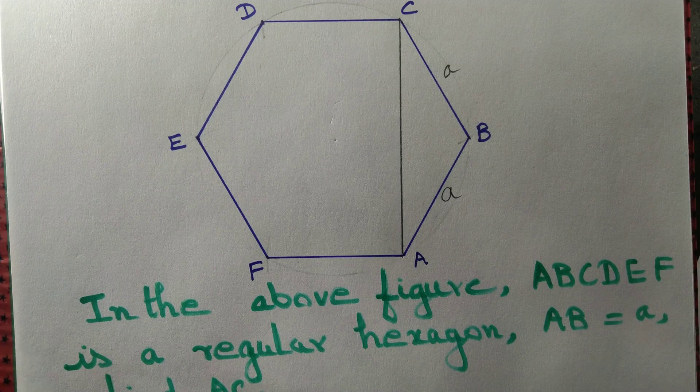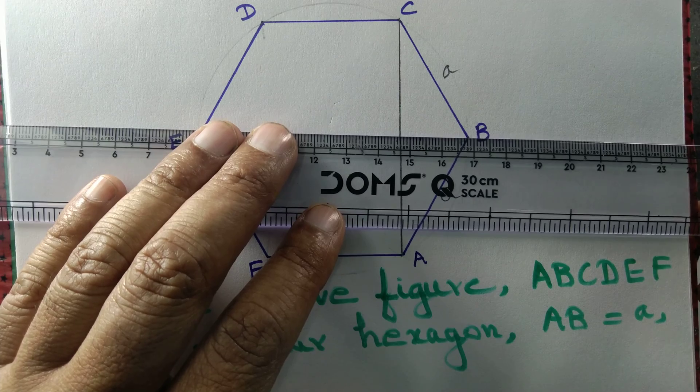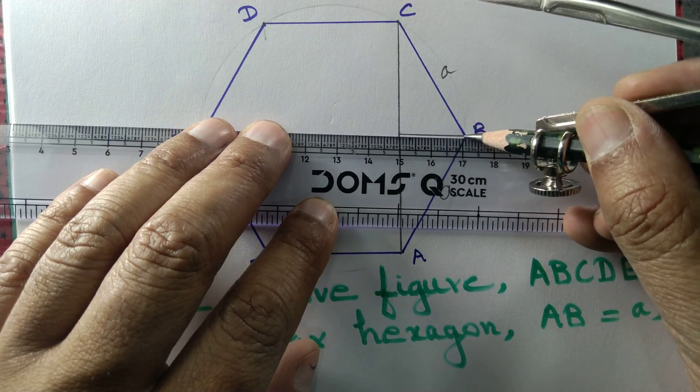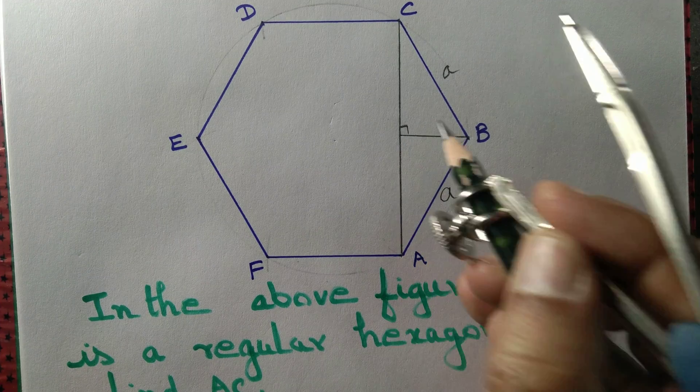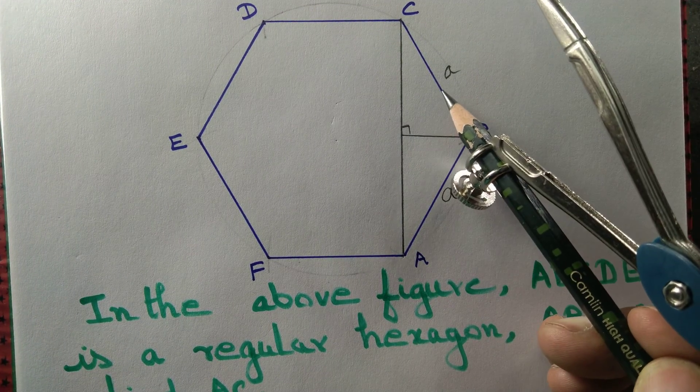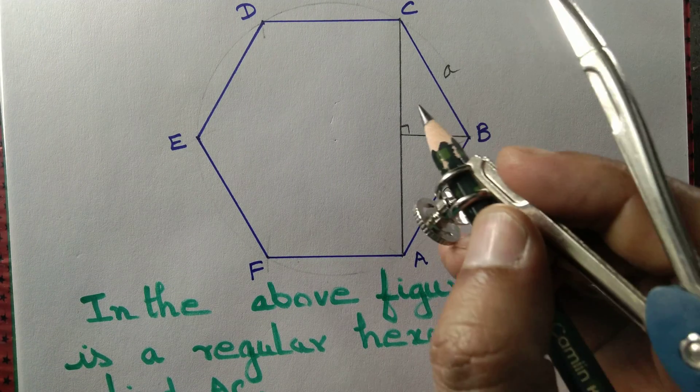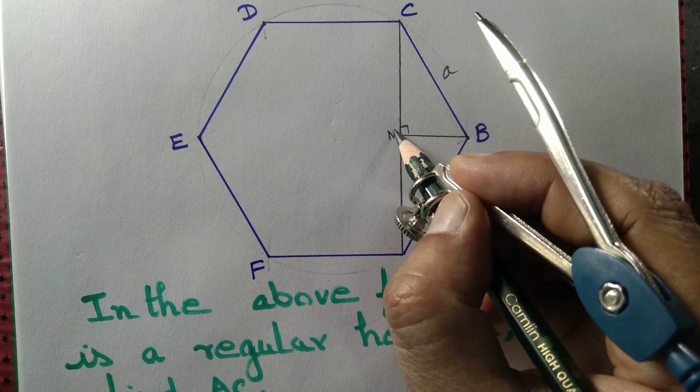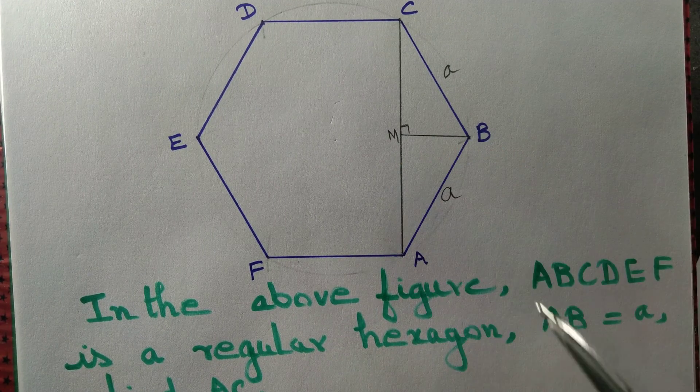We draw a perpendicular from B to the line segment AC. Then by applying right angle hypotenuse side congruence, if the perpendicular intersect AC at M, then triangle BMC is congruent to BMA.